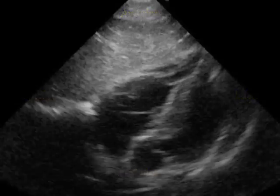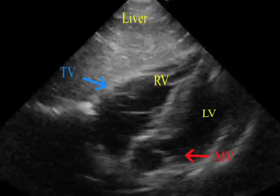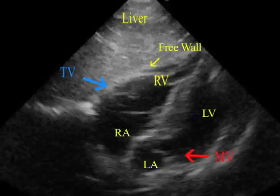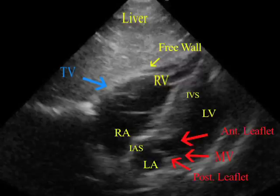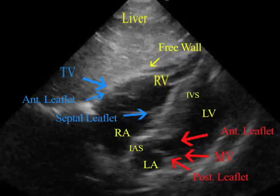The structures visible in the subcostal four-chamber view are the liver, the left ventricle, the left atrium, the right atrium, the right ventricular free wall, the interatrial septum, the interventricular septum, the posterior mitral leaflet, the anterior mitral leaflet, the septal tricuspid leaflet, and the anterior tricuspid leaflet.